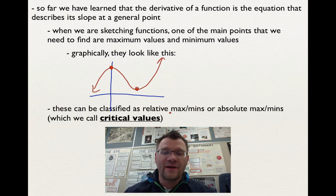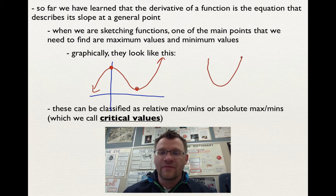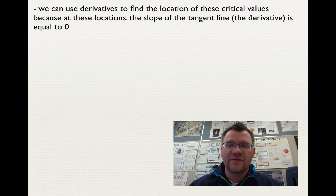These max and min values can be classified as relative max or min — these two would be relative because the function does go higher than this point, just not at that point — or absolute max or min. An absolute max or min might be something like a parabola where you have a minimum that is the lowest point of the whole graph. These are also sometimes called critical values. We can use derivatives to find their location because at these locations the slope of the tangent line, which we call the derivative, is going to be equal to zero.